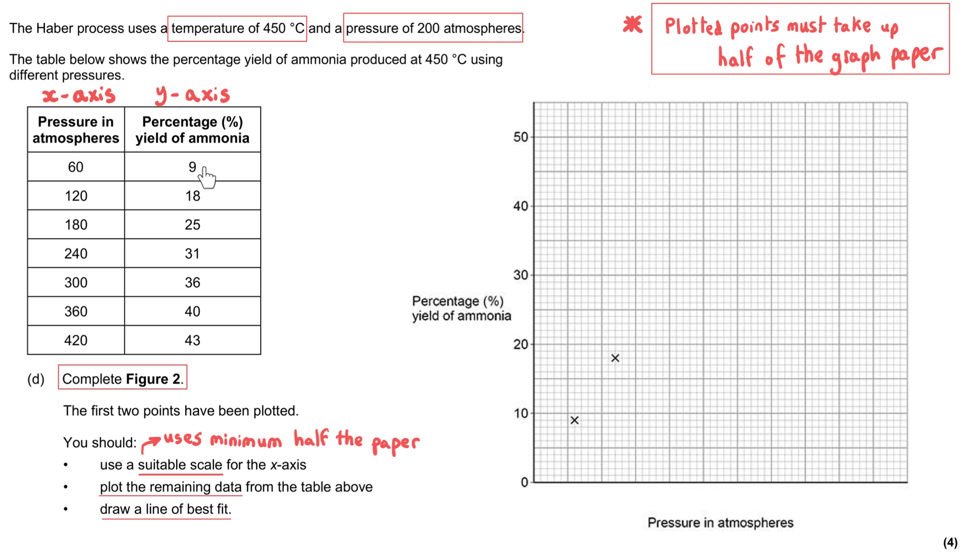The percentage of ammonia being 9, that's this point that they've plotted here, and that's 60 atmospheres for this point. That means that this point must be 60, and the next one along is 18, and the atmospheres is 120, so that means this is 120. So what we can deduce here is that if this is 120, this point here must be 100, and so each minor grid line is 10 atmospheres. That means we've got 50, 100, 150, etc. as we work our way along to the right-hand side. So that's one mark now for a suitable scale.